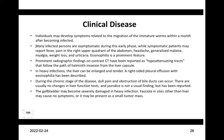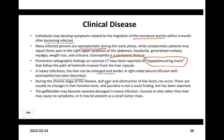As a clinical disease, individuals may develop symptoms related to migration of immature worms within a month after becoming infected. Many infected persons are asymptomatic, especially in the early phase. Symptomatic patients may report fever, right upper quadrant pain, headache, generalized malaise, and eosinophilia is a prominent feature. Hypoattenuating tracts on contrast CT have been reported, indicative of parasite migration pathways. In heavy infection, the liver can be enlarged and tender. During chronic stage, dull pain and obstruction of bile ducts can occur, and there are usually no changes in liver function tests. Jaundice is not a usual finding in this case.